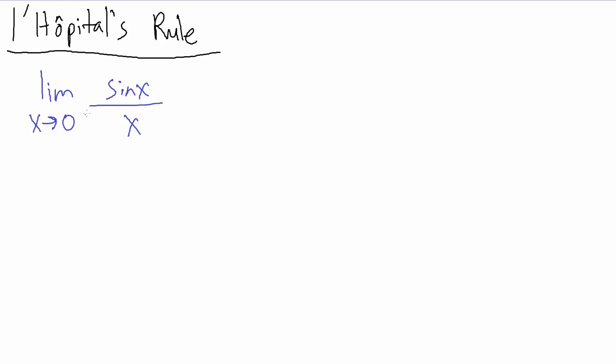So before we use L'Hopital's rule, what we always want to do is direct substitution when we're evaluating a limit. So if you want to evaluate the limit as x goes to zero of sine of x over x by direct substitution, what's going to happen? Well, so as x goes to zero,